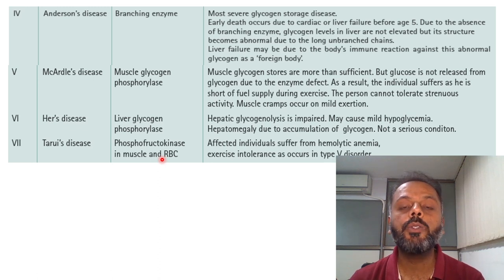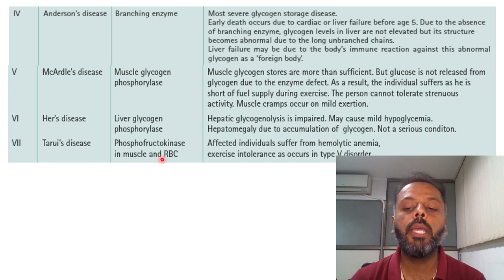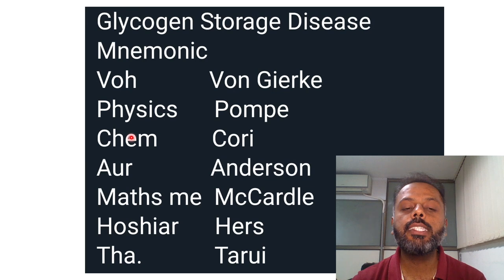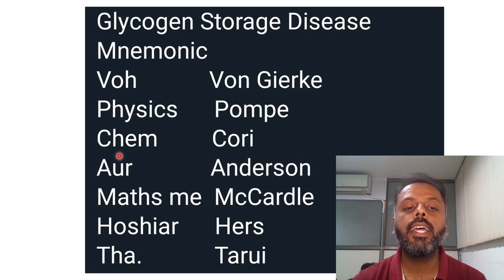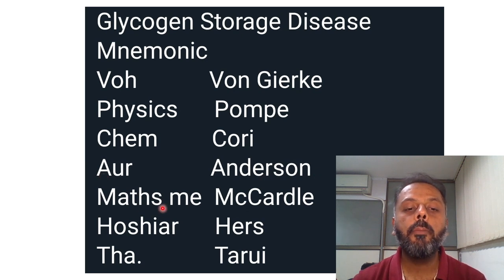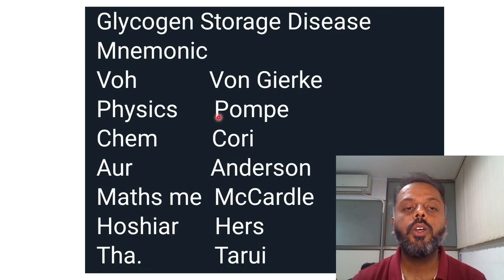To remember the names of Glycogen Storage Diseases, use the mnemonic: 'Wo physics, chemistry or maths me hoshyar tha.' Wo stands for Von Gierke's disease, Physics for Pompe's disease, Chemistry for Cori's disease, Or for Anderson's disease, Maths for McArdle's disease, Hoshyar for Hers disease, and Ha for Tarui's disease.